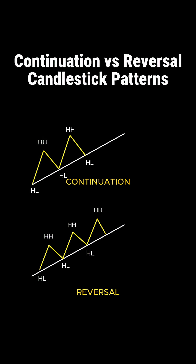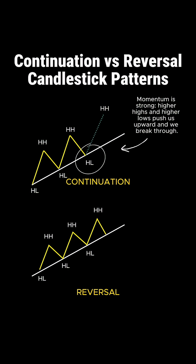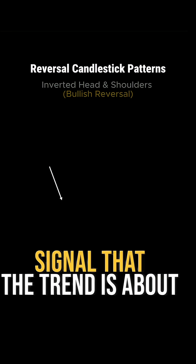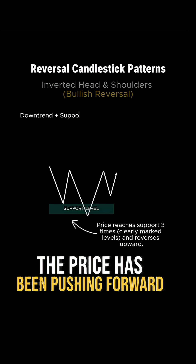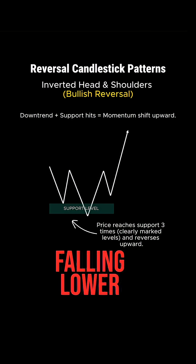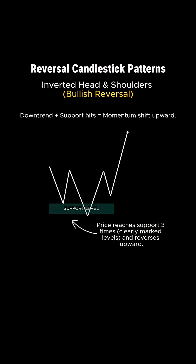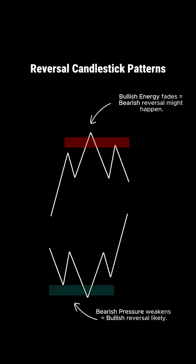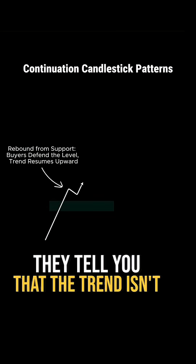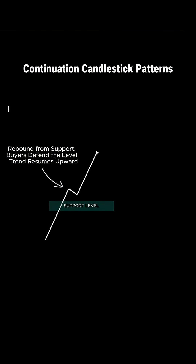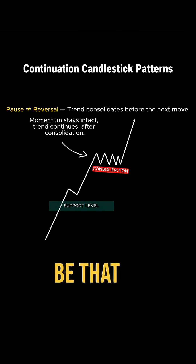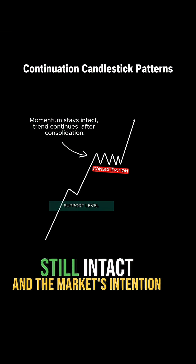Let's keep this simple. The main difference between continuation and reversal patterns comes down to momentum — are we sticking with the current trend or flipping the script and heading in a new direction? Reversal patterns signal that the trend is about to end; the sentiment is shifting, and bullish energy is fading or bearish pressure is losing its steam. Continuation patterns tell you that the trend isn't done yet — it's just taking a breather, a pause or consolidation before the next move. The main message is that momentum is still intact and the market's intention hasn't changed.